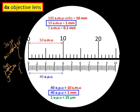So 40 eyepiece units is equivalent to 1 millimeter, meaning one eyepiece unit equals 1 mm ÷ 40 = 25 micrometers. This is the same as 1000 micrometers divided by 40, which always gives 25 micrometers. So one small division on the eyepiece graticule is worth 25 micrometers when using the four times objective lens.